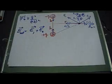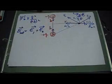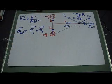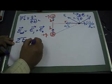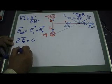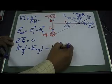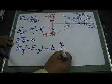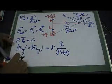The x-components cancel. Why? Because the magnitudes of the electric field due to both charges at point P are equal. Since they are equal in magnitude and opposite in direction along x, they cancel. So the sum of the x-components of the electric field is equal to zero.